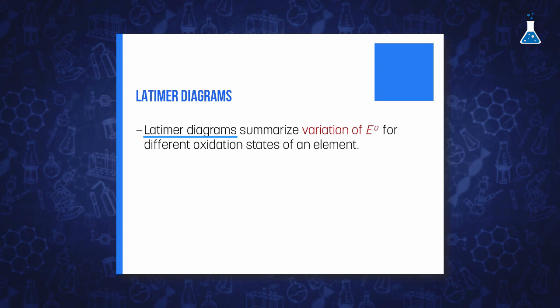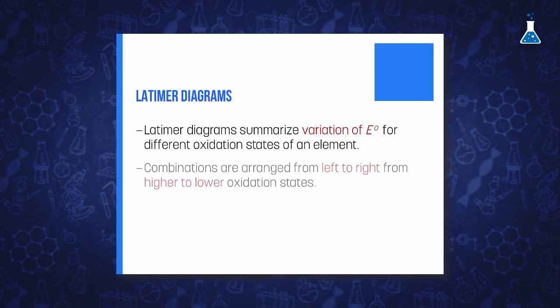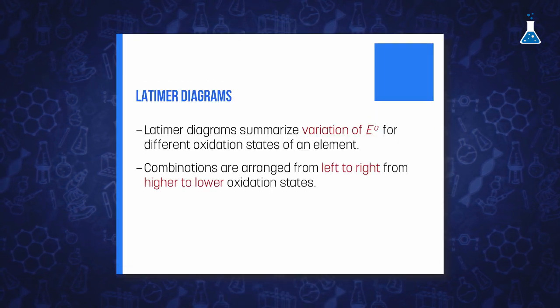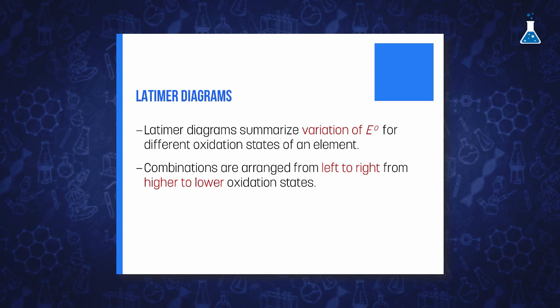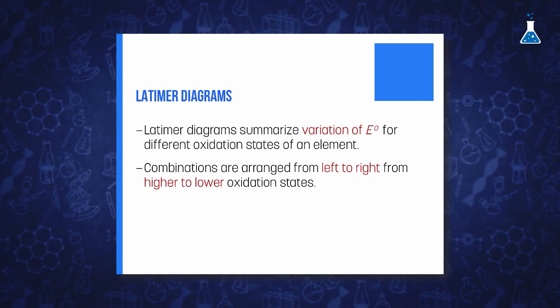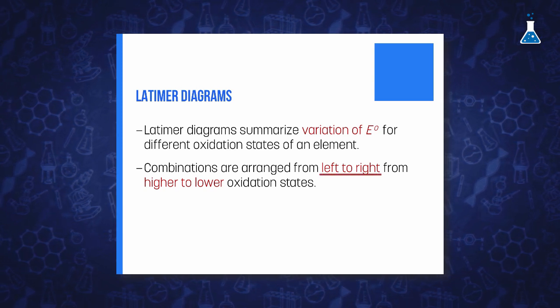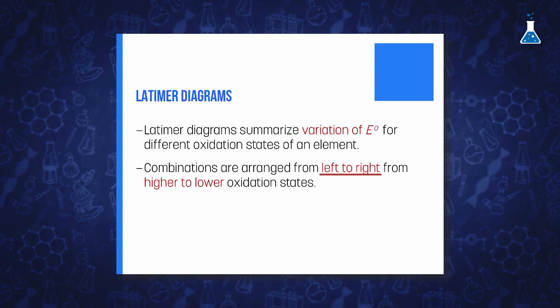This diagram of an element shows in a very compact way how the standard electrode potential varies with the oxidation state for the different combinations of that element. The species are arranged in such a way that those with the highest oxidation state are placed on the left with successively lower oxidation states to the right.